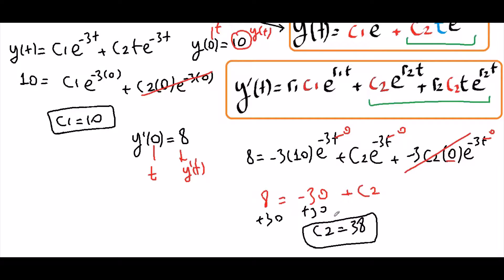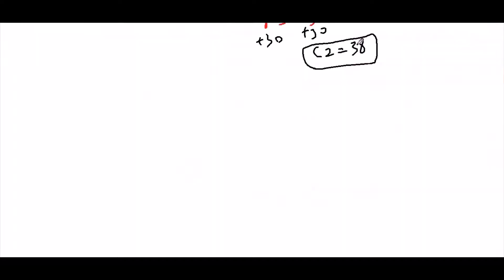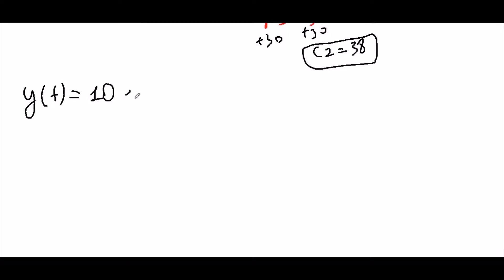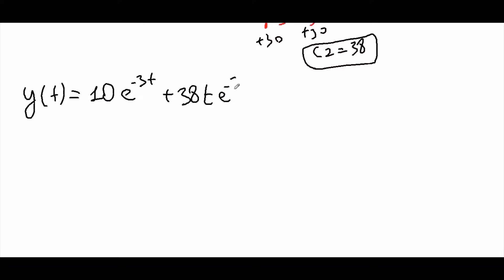Now we have our c1 and c2 to plug into our general solution. So y(t) = 10·e^(-3t) + 38·t·e^(-3t). This is our answer.